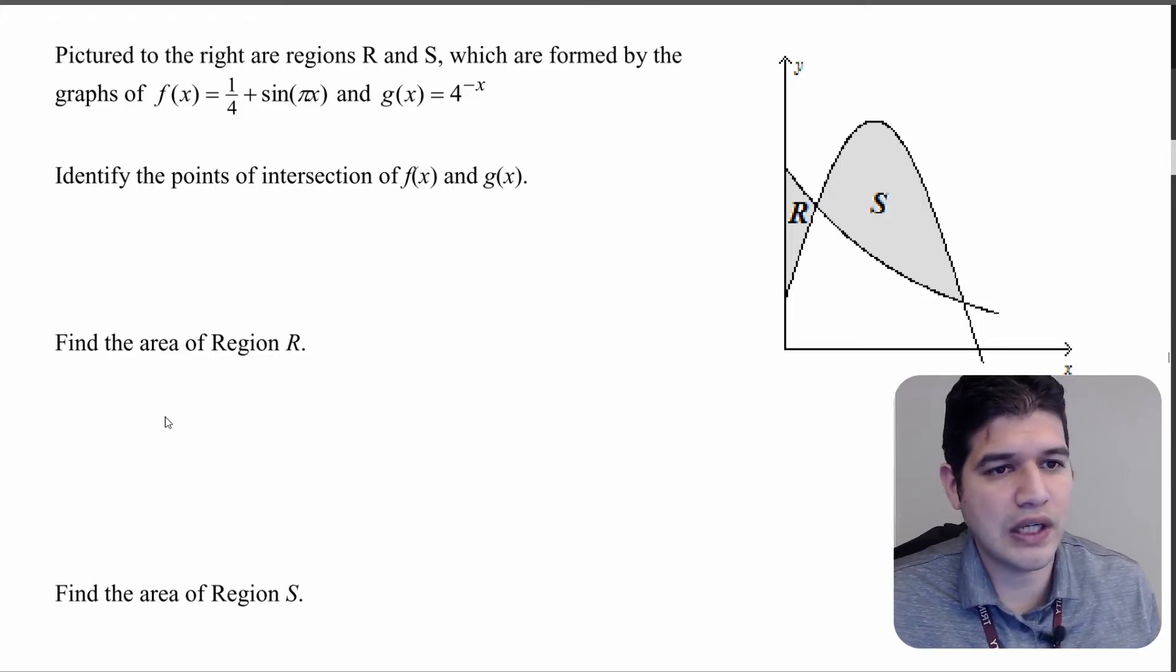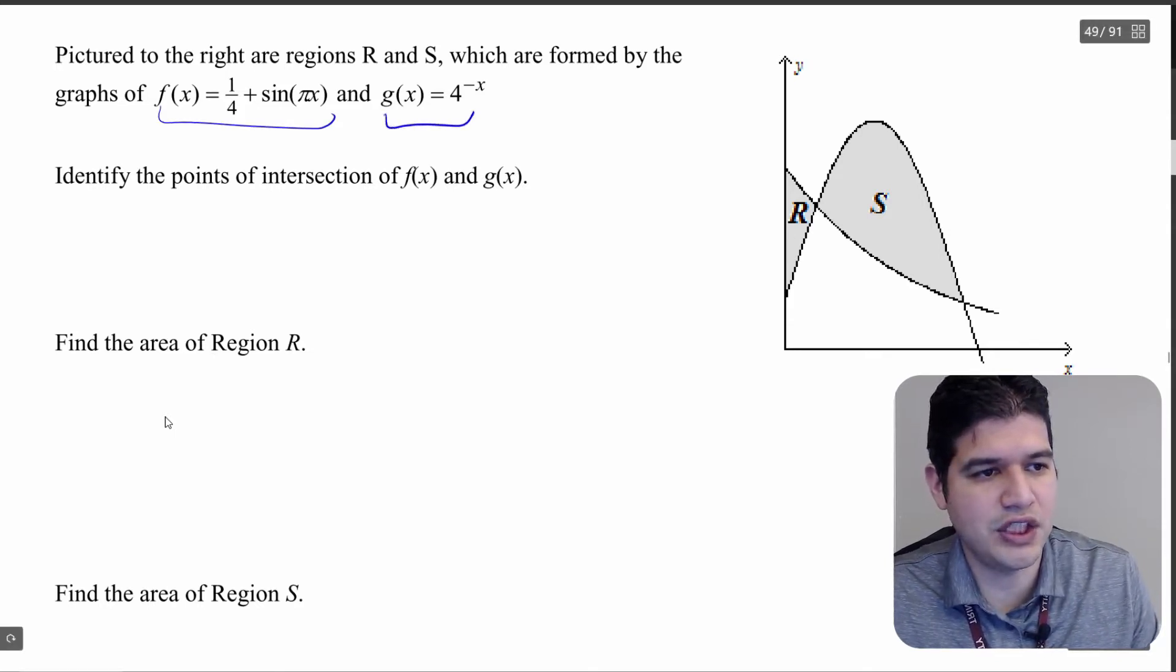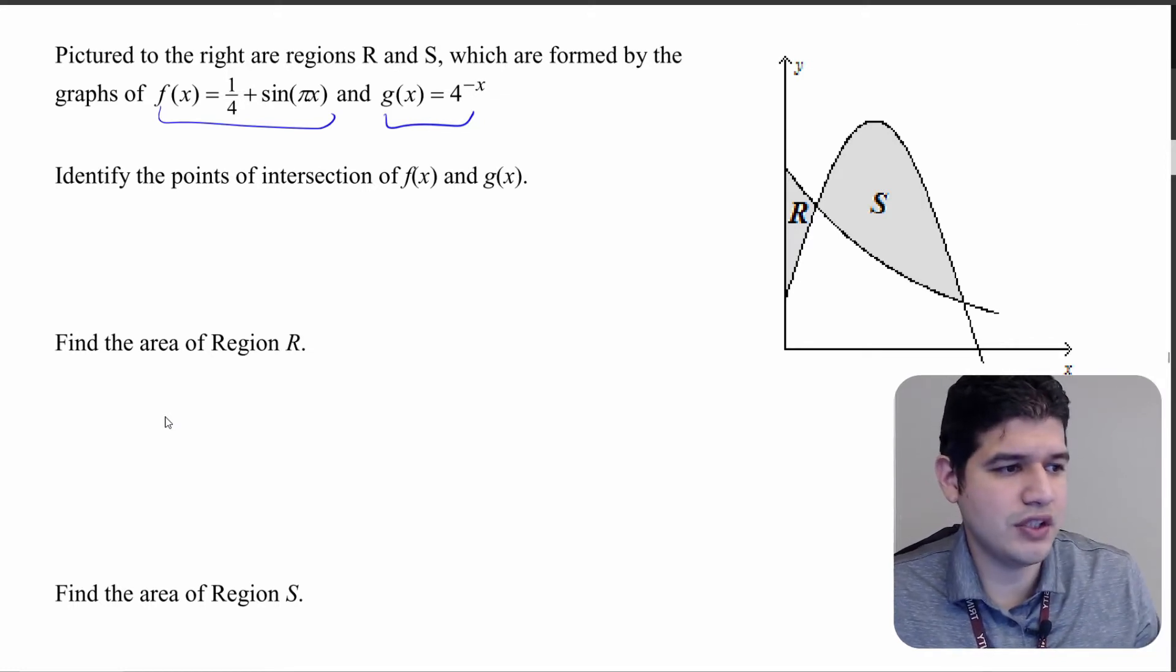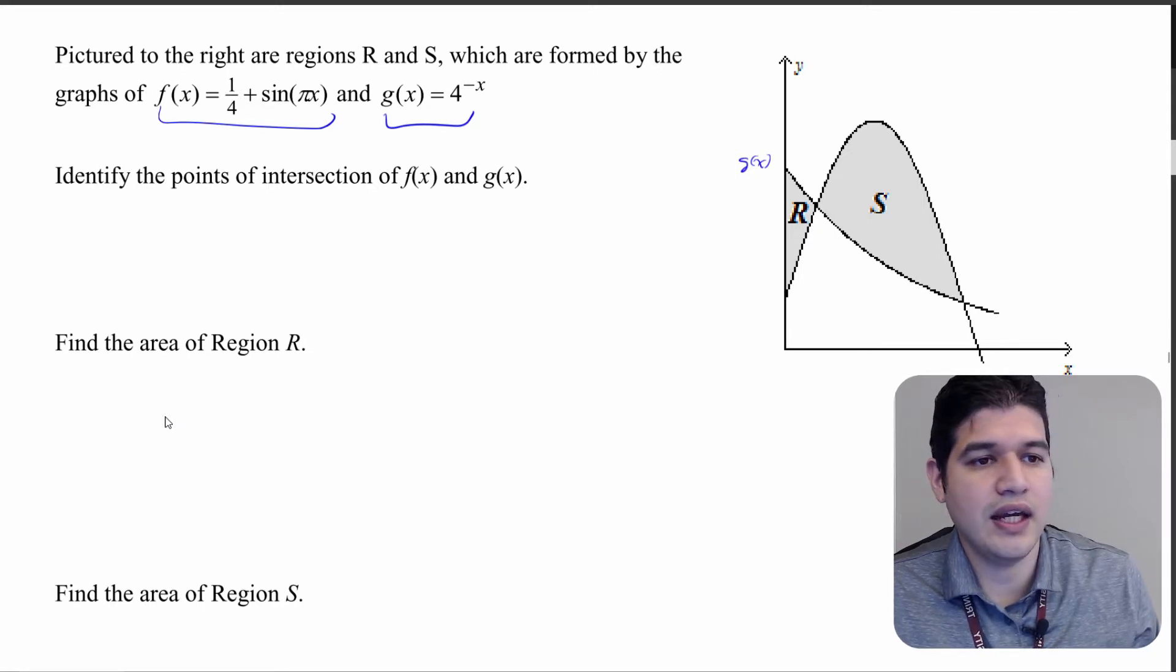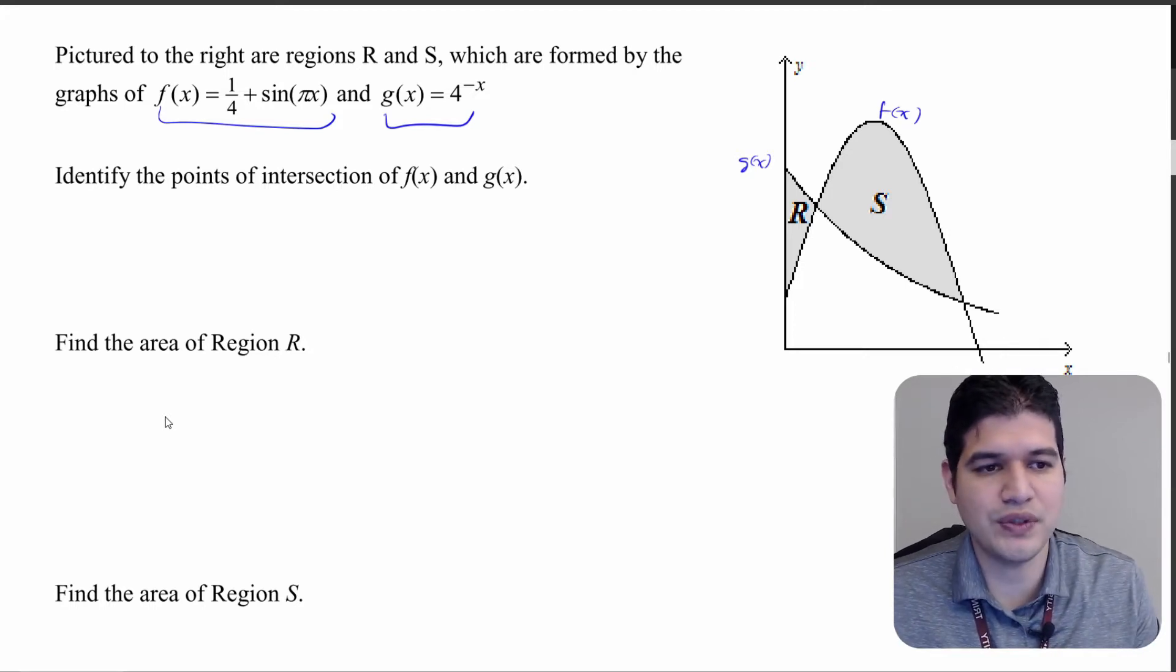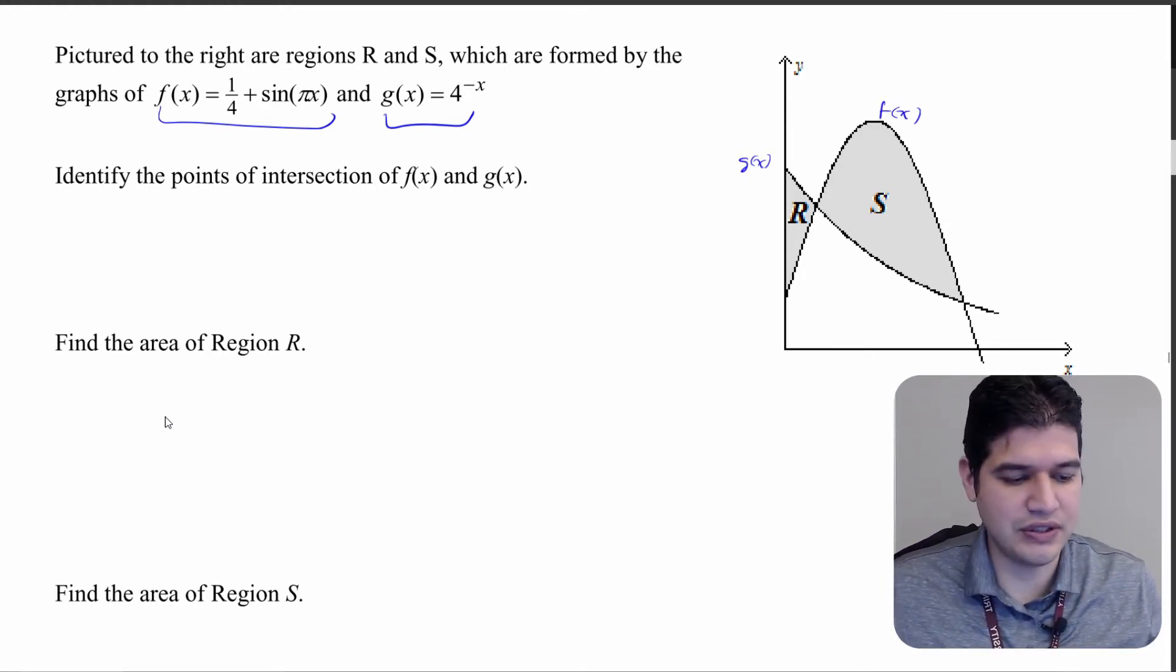You're going to need your calculator for this question so make sure you go and grab that if you don't already have it handy. We have two functions here: f of x and g of x. g of x is our decaying exponential function and that is going to be this line right here. And then f of x is going to be this sinusoid that's happening over here. So first thing we want to do is identify the points of intersection for f of x and g of x. This is a calculator question so put it in your calculator and find those intersection points.